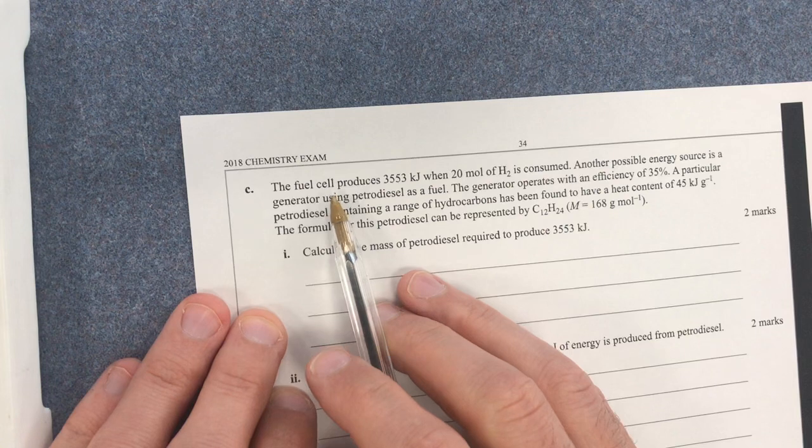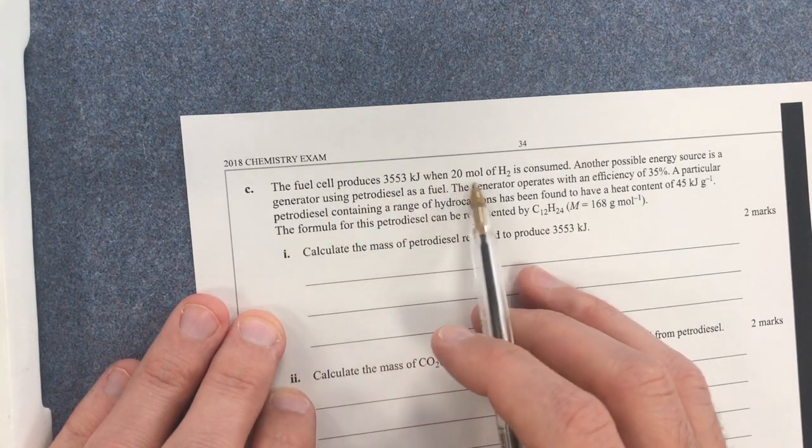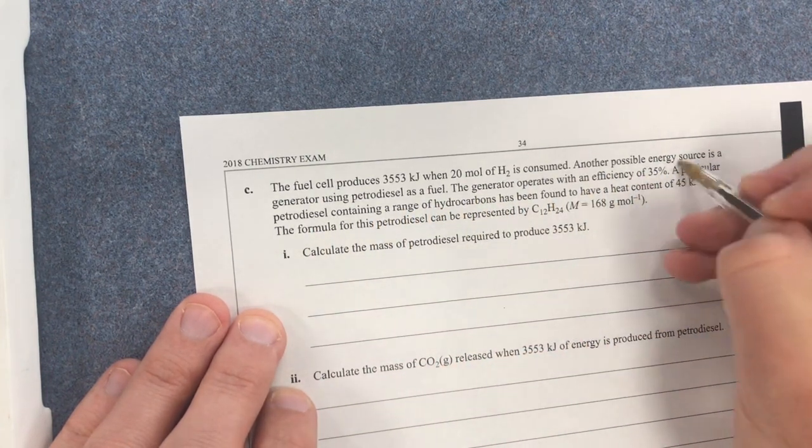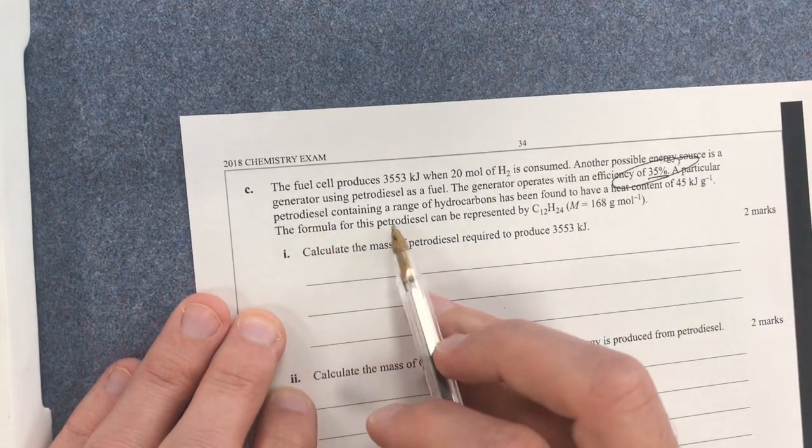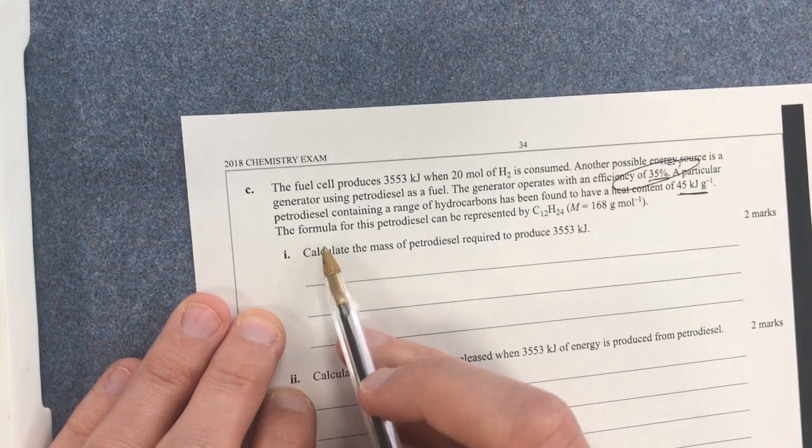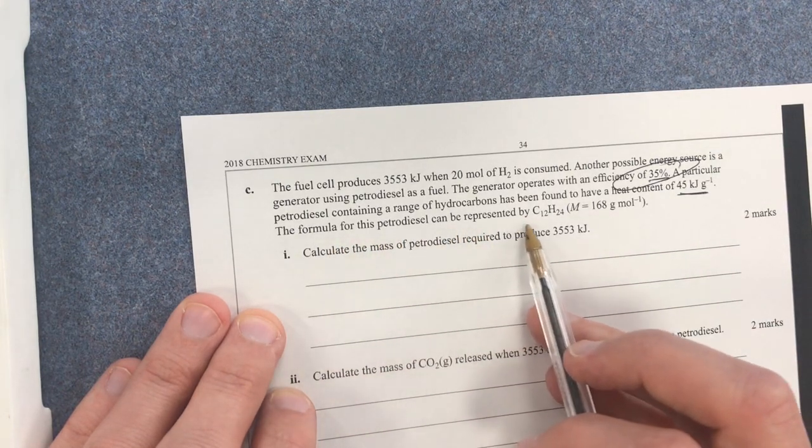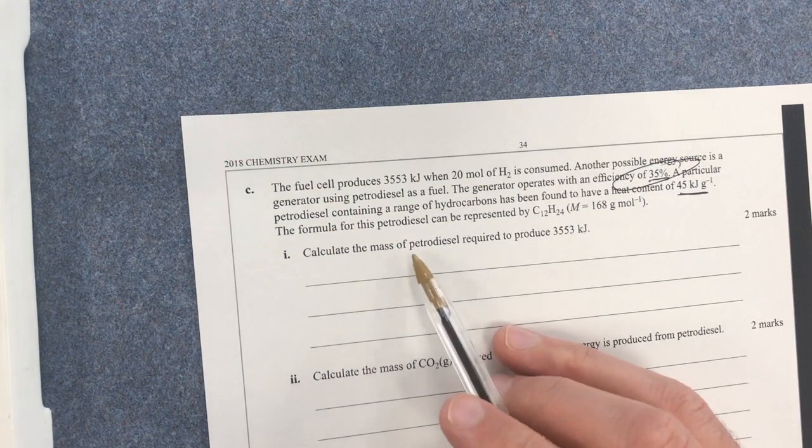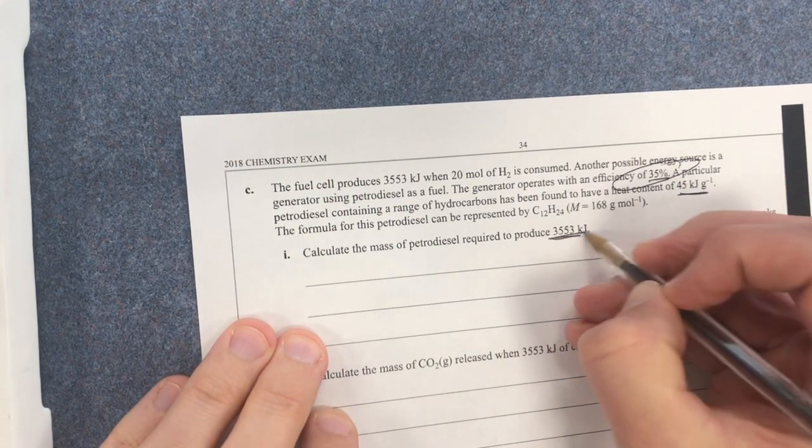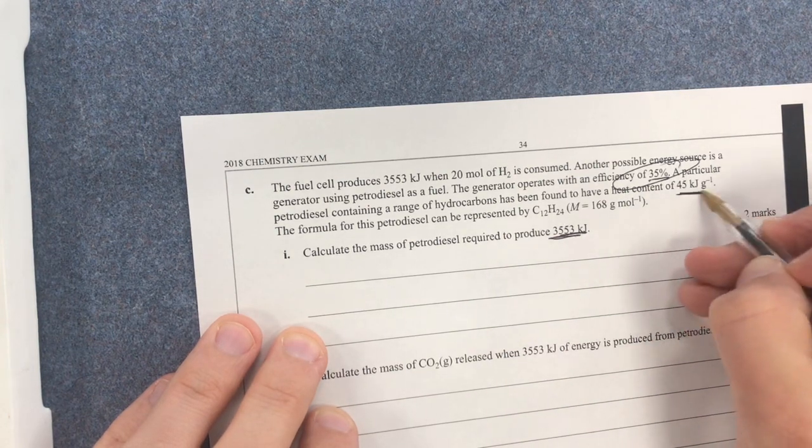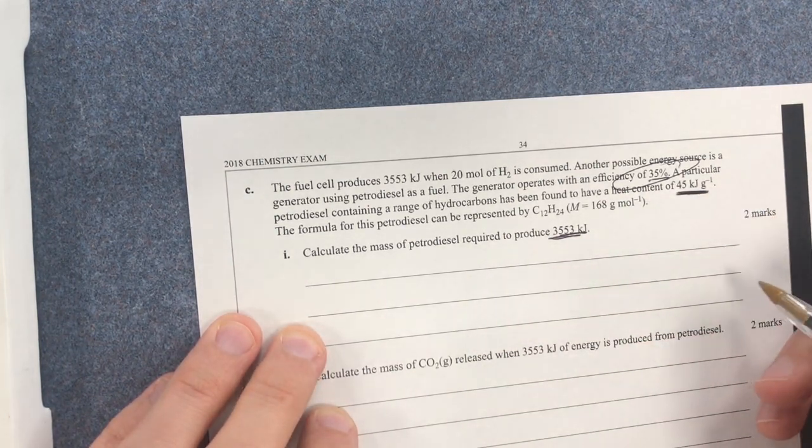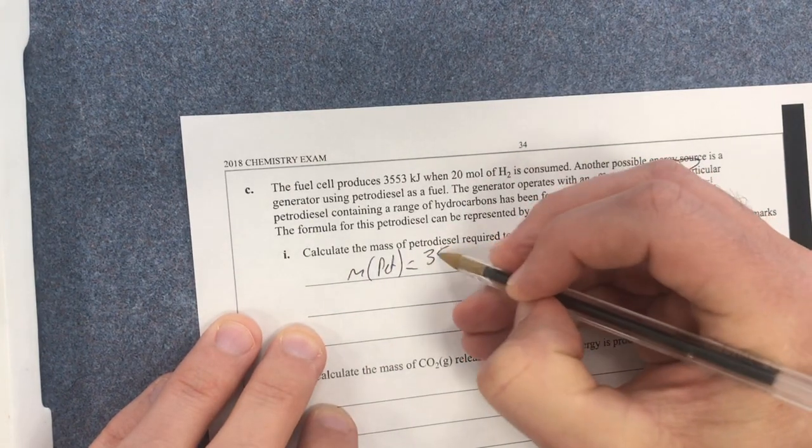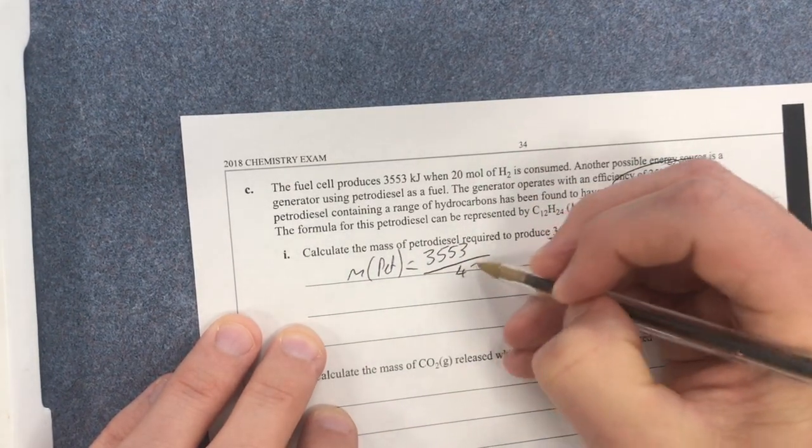Let's move on to the last part of this question. Question part C. A fuel cell produces this much energy when 20 moles of hydrogen is consumed. Another possible energy source for this fuel generator operates at efficiency of 35%. A particular petrodiesel containing a range of hydrogen found to have a heat of that. For this formula, the formula for this petrodiesel can be represented as C12H24 with the molar mass of that. So what I need to find out is calculate the mass of petrodiesel required to produce that much energy.